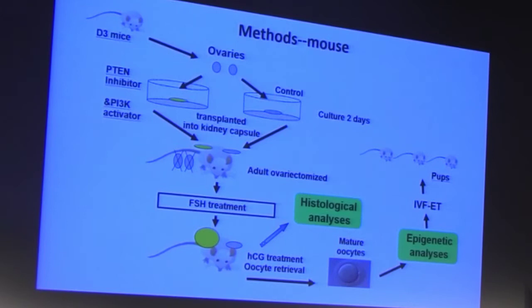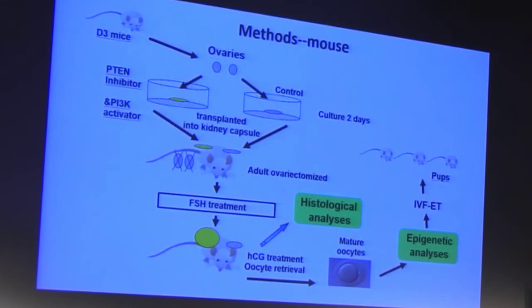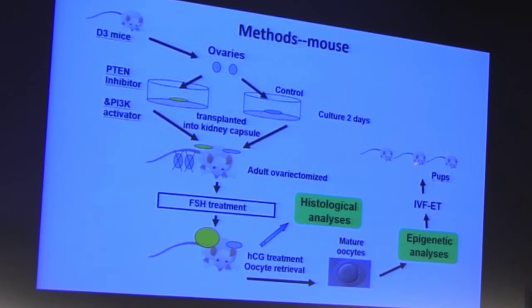Using these reagents, we performed an animal study. We used day-3 mice whose ovaries consist only of primordial follicles, divided into control and drug treatment groups. After two days of culture, we transplanted the ovaries into the kidney capsule of adult ovariectomized mice. Ovariectomization was performed to increase endogenous FSH levels to further support follicular growth after activation of dormant follicles. We also treated animals with FSH, and finally gave HCG to obtain mature oocytes, then performed IVF-ET to obtain offspring.